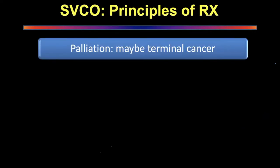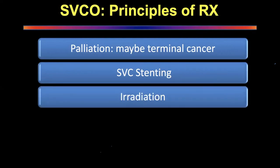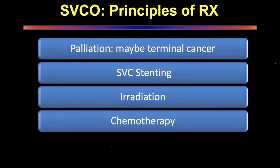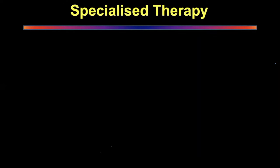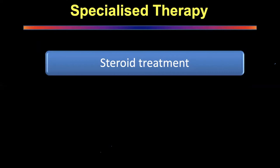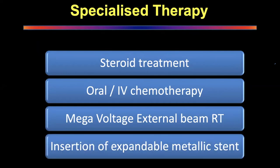Palliation may be used particularly for terminal cancer — just place an SVC stent, make the patient symptom-free, and give the minimum therapy required. Palliative irradiation uses a lower dose — similar to mesothelioma where the dose goes to about 30 Gy — to reduce tumor mass so compressive symptoms are relieved. Specialized therapies available are: steroid treatment, IV chemotherapy, megavoltage external beam radiotherapy, and insertion of an expandable metallic stent. The order may change depending on the grade of the patient.